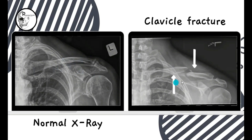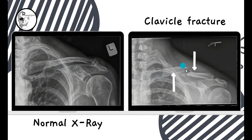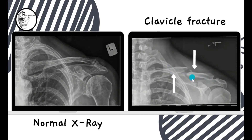On the right side, you can clearly see the fracture of the clavicle. If you trace the margin of the shaft of clavicle, you can find a discontinuity here. You can clearly see that the medial fragment of the clavicle has been displaced upwards by the pull of a muscle called the sternocleidomastoid, and on the lateral side, the lateral one-third is displaced downwards because of the weight of the upper limb.